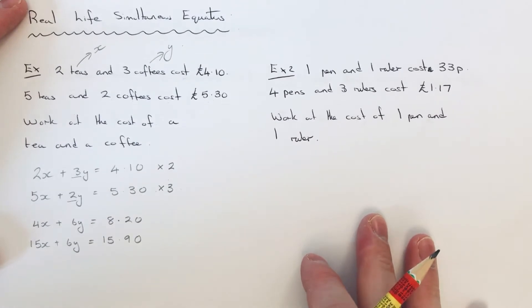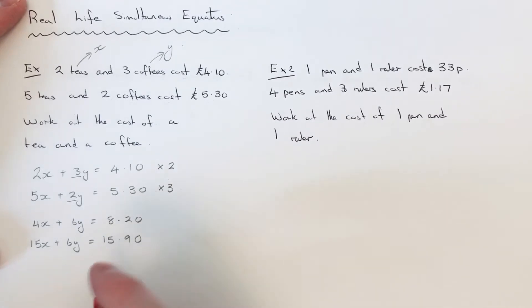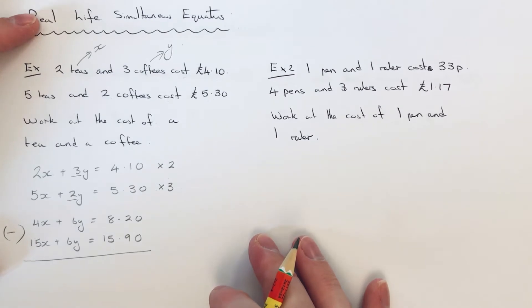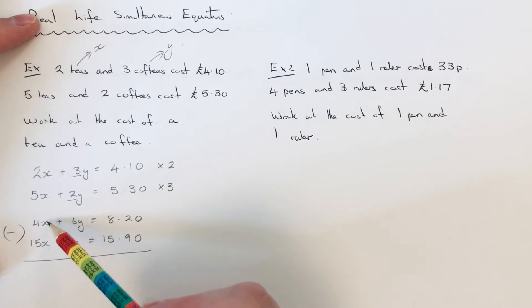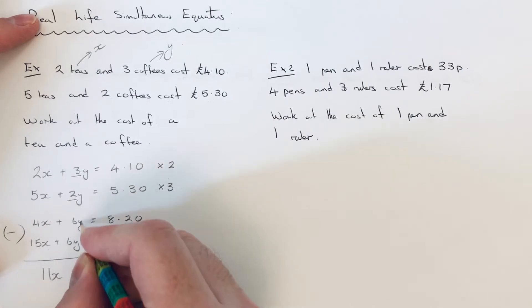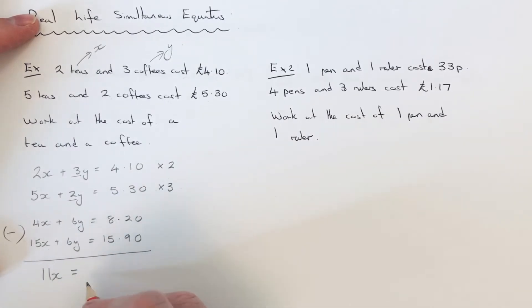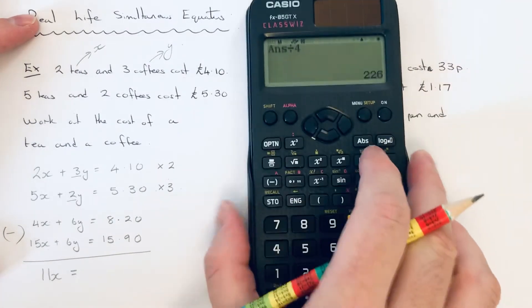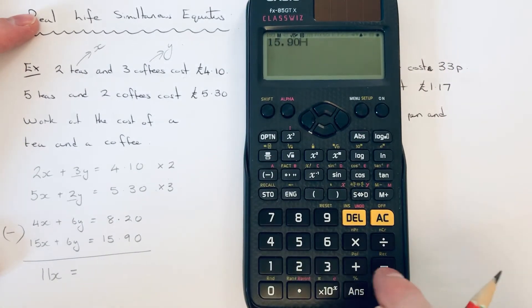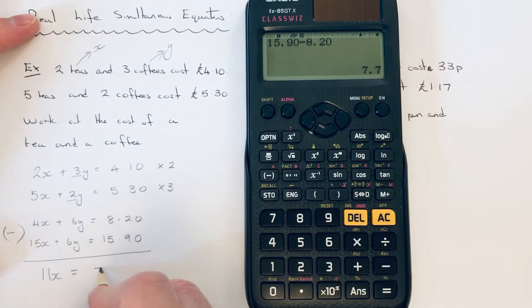So as you can see, the y values are now the same. So we can take these equations away. This will eliminate the y variable. So I'm going to do the bottom one take away the top one. Otherwise you'll get negatives if you go top take away bottom. So 15x take away 4x is 11x. We know that the y's cancel. And £15.90 take away £8.20 is £7.70.